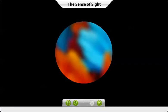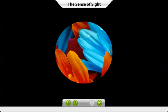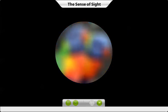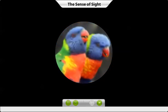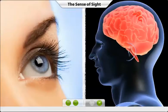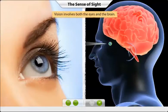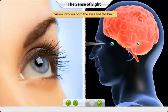Our perception of the world of light, darkness, and color is shaped to a large extent by our sense of sight. Vision involves both the eyes and the brain. The eyes work like sensors and transmit information about the world outside to our brain. To understand exactly how this happens, let's explore the different parts of the eye.